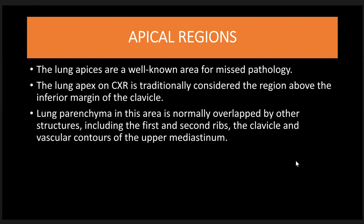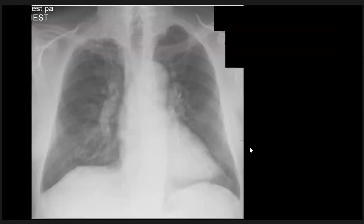The apical region or apical zone: the lung apices are well-known areas of missed pathology. The lung apex on chest X-ray is traditionally considered the region above the inferior margin of the clavicle. Lung tissue in this area is normally overlapped with other structures including the first and second rib, the clavicle, and vascular structures of the upper mediastinum. Here are some examples: we have a patient with thickening of the right apical cap.